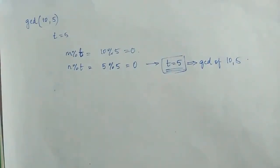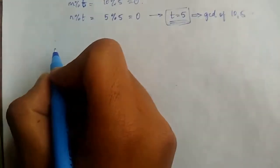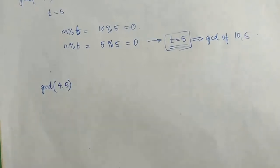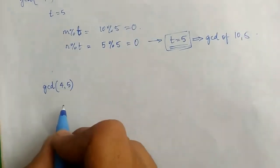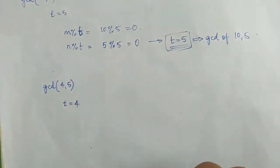In this way we keep on applying the values. Let's try another example: find the GCD of 4 and 5. The first step is finding the minimum among 4 and 5 and assigning that value to t, so here t is equal to 4.